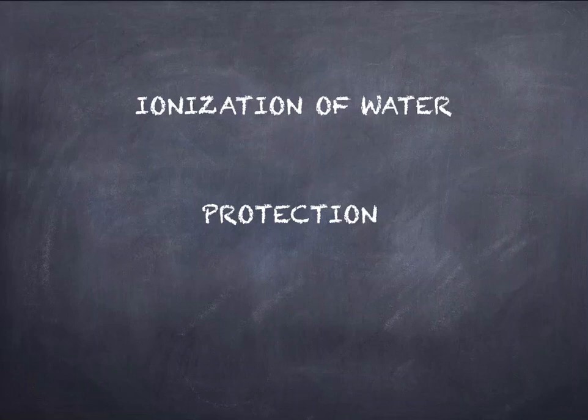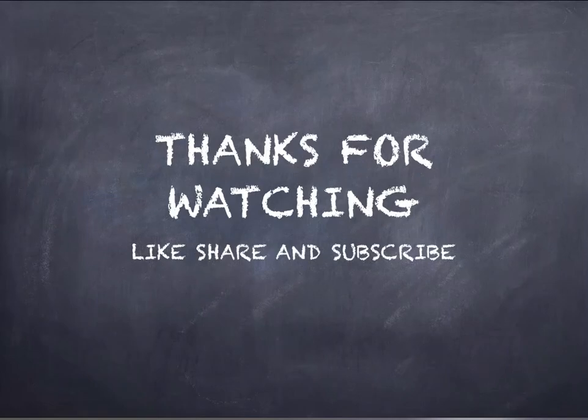Another property is that water provides protection. Water acts as a lubricant and also as a cushion. As a lubricant, synovial fluid present at the ends of joints provides protection from friction. Pleural fluid protects our lungs during contraction and expansion. Pericardial fluid protects our heart. As a cushion, water protects us from physical trauma — for example, cerebral spinal fluid surrounds our brain and provides it protection. So as a lubricant, water protects from friction; as a cushion, it protects from trauma or physical injury.